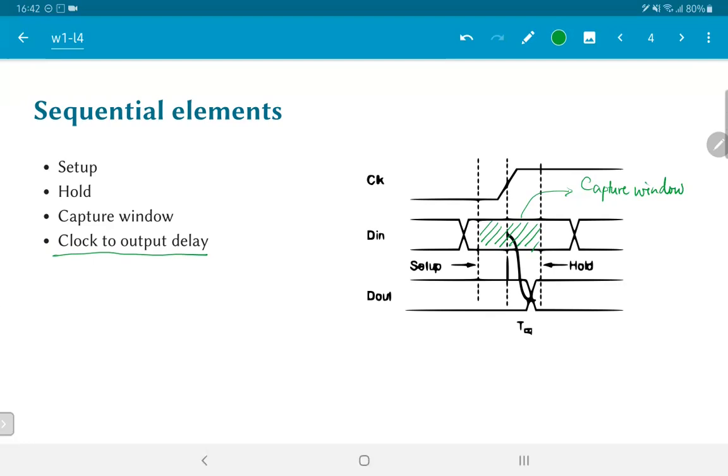So what does this mean? Combinational elements have direct delays of their own, whereas sequential elements also have something called the setup hold capture window during which the input should not change.